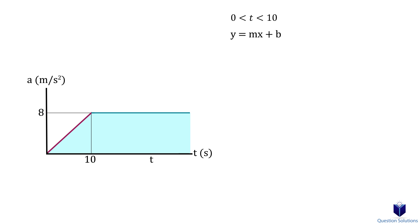The slope is 8 over 10, which is 4 over 5, so the equation becomes a is equal to 4 over 5t. The second segment is simply a equals 8.